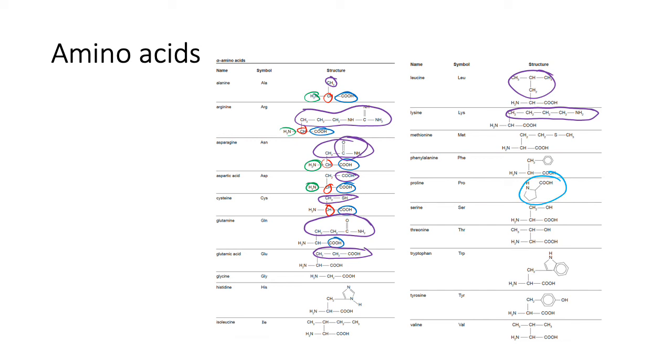Proline is just a bit funny. It technically has an amine group there and a carboxylic acid group, and it's both joined to that alpha carbon, which happens to be that one over there. But it is classed as an amino acid because it has that amine group, even if it's not in that NH2 form.